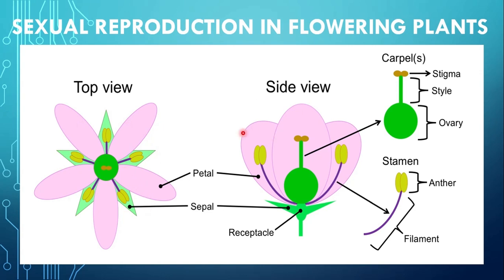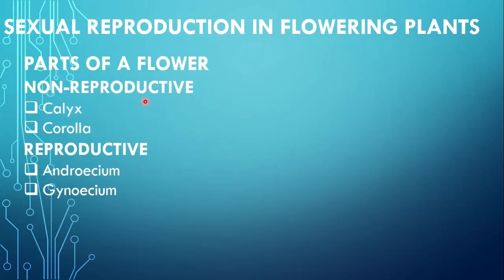Agar in whorls ko hum diagram ke through understand karein, to top se jab kisi flower ko view kiya jata hai to hamen yahan pe four whorls nazar aate hain. The innermost whorl jo ke female gametes banata hai, then is innermost whorl ke bahir ek doosra inner whorl present hota hai jisko stamen bolte hain aur is mein male gametes bante hain. Then third outer whorl aur fourth outermost whorl jo inner whorls ko protect karta hai. Non-reproductive whorls mein calyx aur corolla aa jata hai, while reproductive whorls mein androecium aur gynoecium aa jate hain.